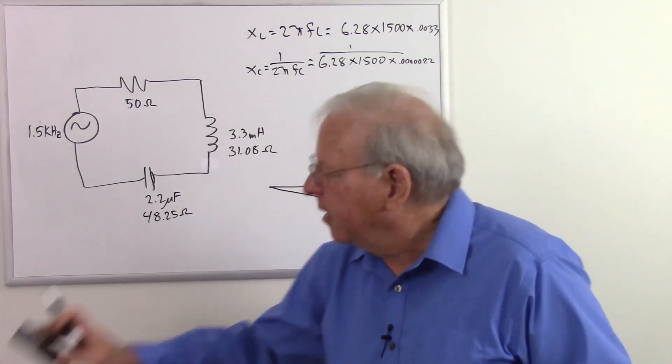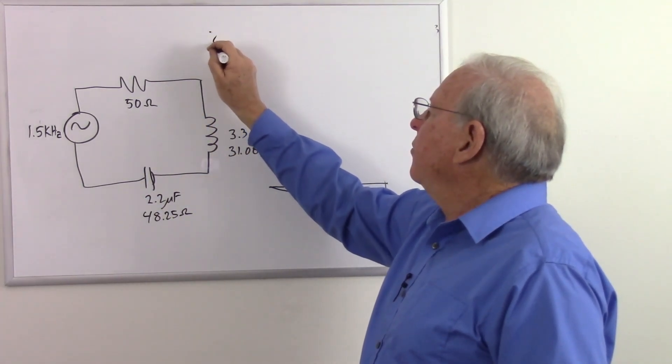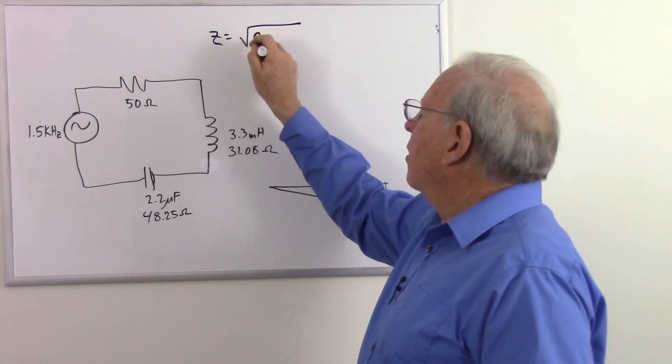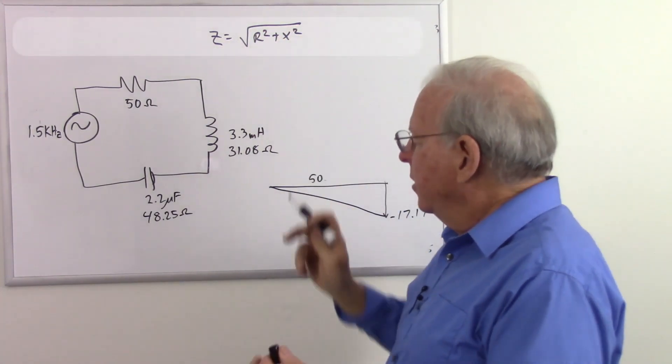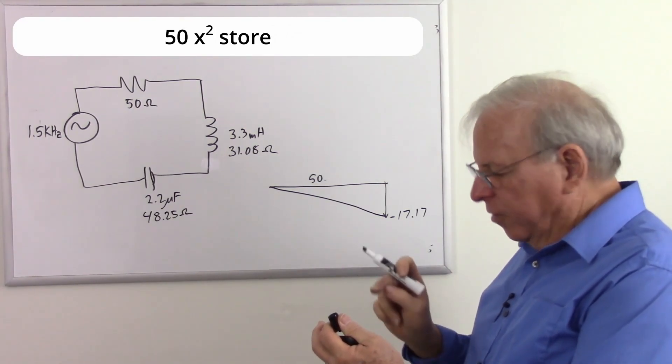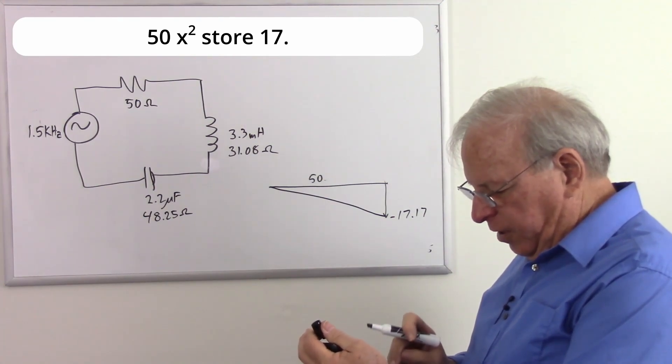Calculate the hypotenuse. Here we go again. Z equals the square root of R squared plus X squared. So that's 50 squared. Store that away. 17.17 squared.